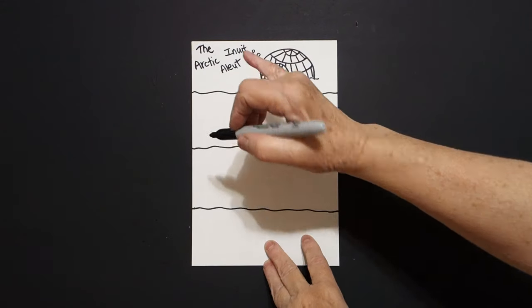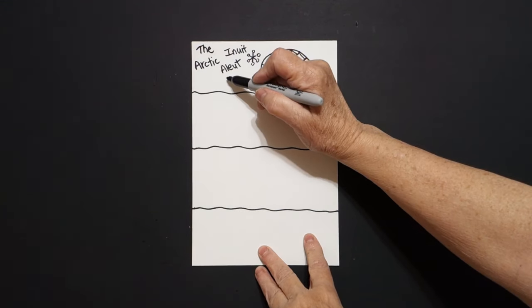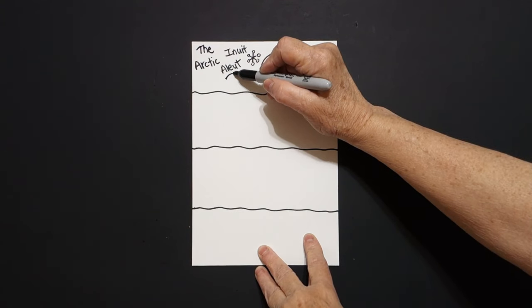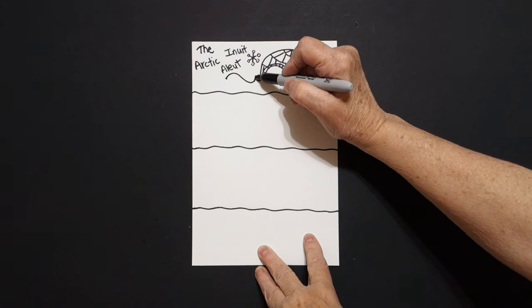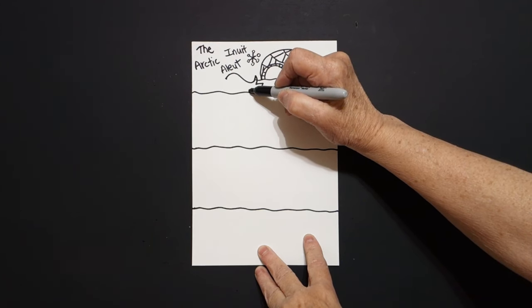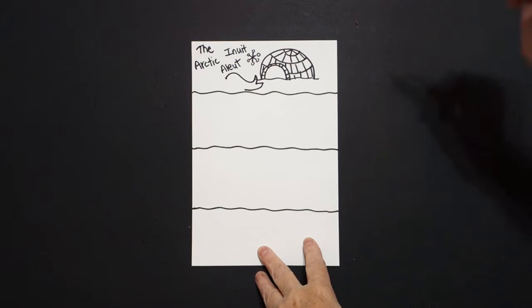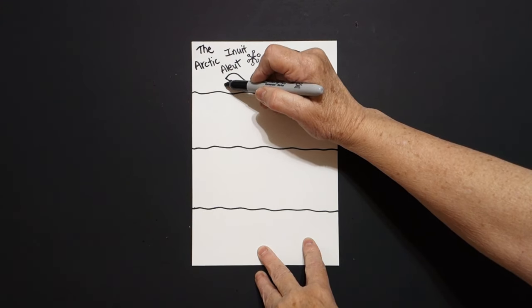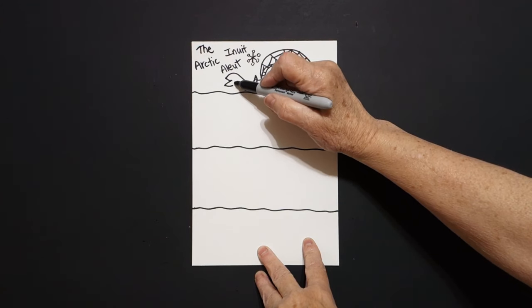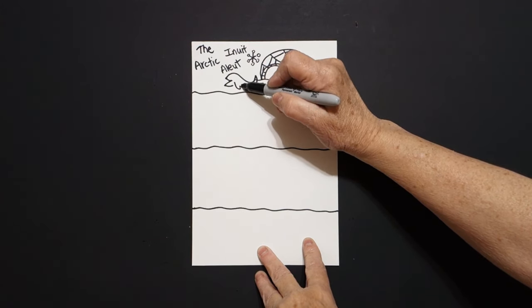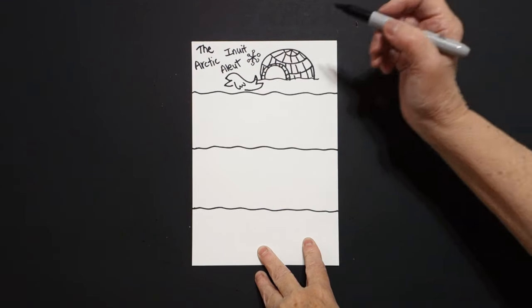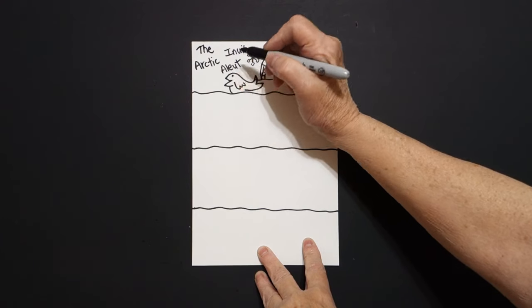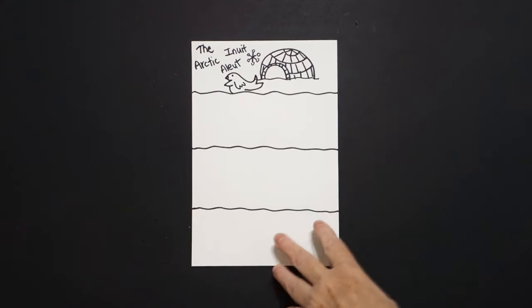Now, the Inuit and the Aleut were very important hunters. So we're going to put a dot, big curved line, up, down, out, over, leave it floating, come inside to the dot, curved line in, out, in, come inside, curved line, leave it floating, and put a little curved line down. Now, put a dot, put a little curved line. Seals, that was what they were hunting.